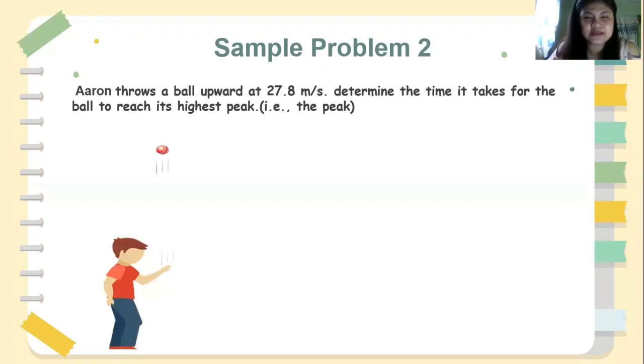I'm Nestering Jaygom Irian and we will have our sample problem number two. Aaron throws a ball upward at 27.8 meters per second, determine the time it takes for the ball to reach its highest peak.